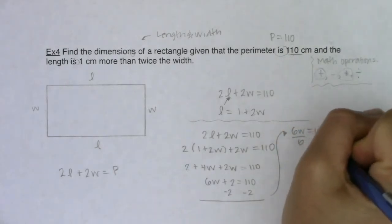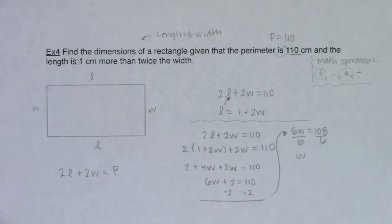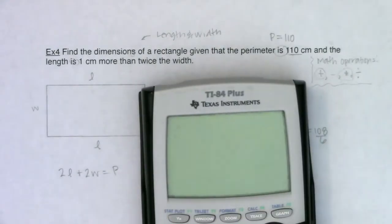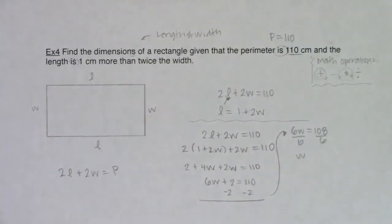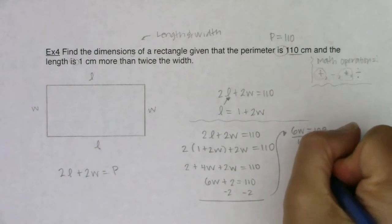I'm going to divide both sides by 6. And let's see what our calculator gives us. So I've got here, let me clear this out, 108 divided by 6. It looks like 18. Alright, so I know W is equal to 18.